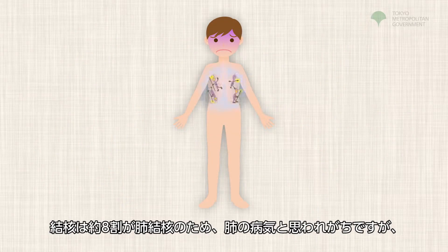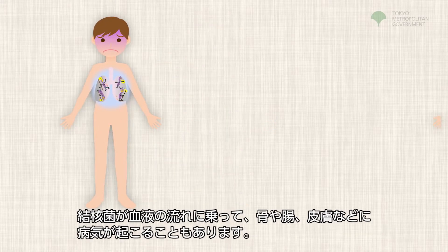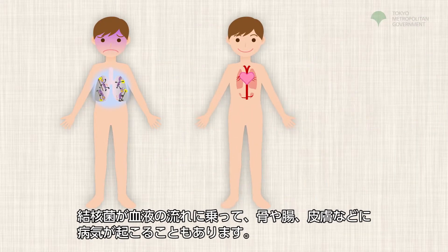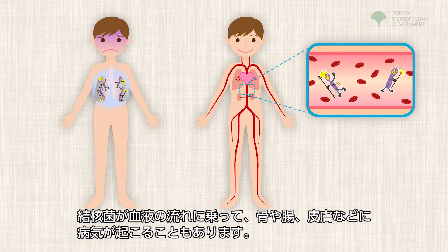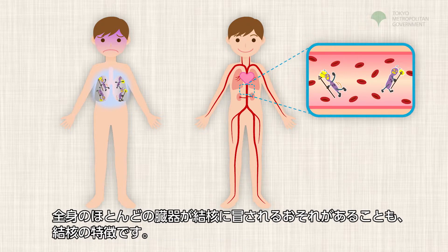Since about 80% of tuberculosis is pulmonary tuberculosis, it is believed to be a lung disease. However, if the tuberculosis germ gets into the bloodstream, it can cause disease in the bones, intestines, skin, etc. A characteristic of tuberculosis is that it can cause harm to most of the organs in the body.